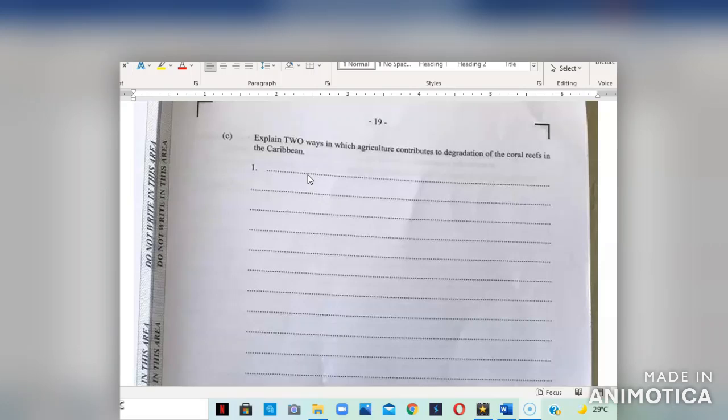Question C asks us to explain two ways in which agriculture contributes to the degradation of the coral reefs in the Caribbean. Chemicals that are used, such as pesticides and fertilizers, can seep into the underwater system and make their way to the seas and ocean where they cause coral reefs to die. Loose soil associated with the agricultural sector can be washed into the ocean causing them to become muddy, which prevents sunlight, thus causing the corals to die. And some chemicals used in the agricultural sector do not dissolve, hence they will eventually become sedimentation which can cover corals and kill them.